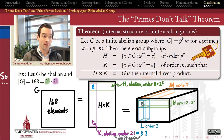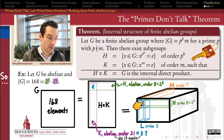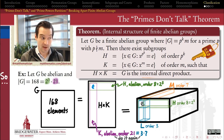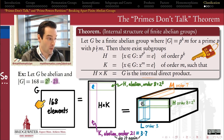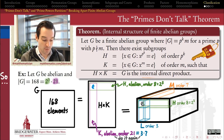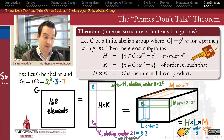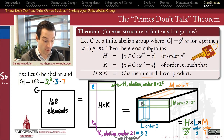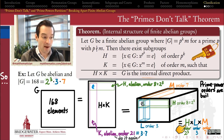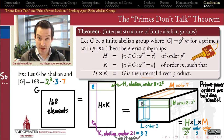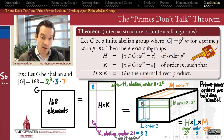At the end of the day, a group of order 168 is the internal direct product of three factors: some group H of order 8, another group of order 7, and another group of order 3. A complete prime factorization of the order of the group tells us exactly the direct product structure according to the primes don't talk theorem. We know for certain every abelian group of order 168 is a direct product of something of order 8, something of order 3, and something of order 7. The remaining question — what are the possible structures of each of these prime-power-order factors — leads us to the next step: the prime powers partition theorem.